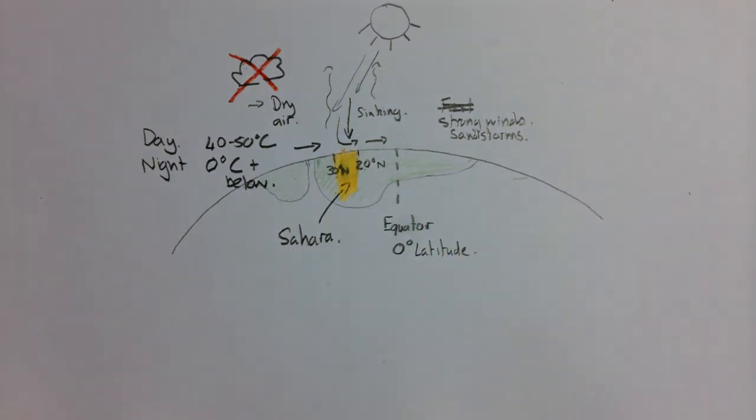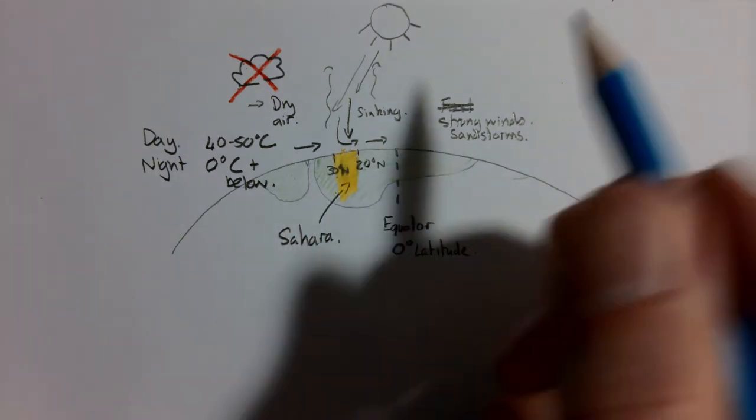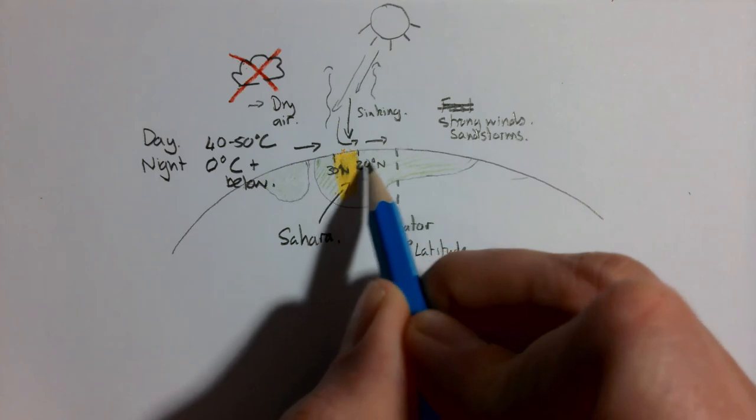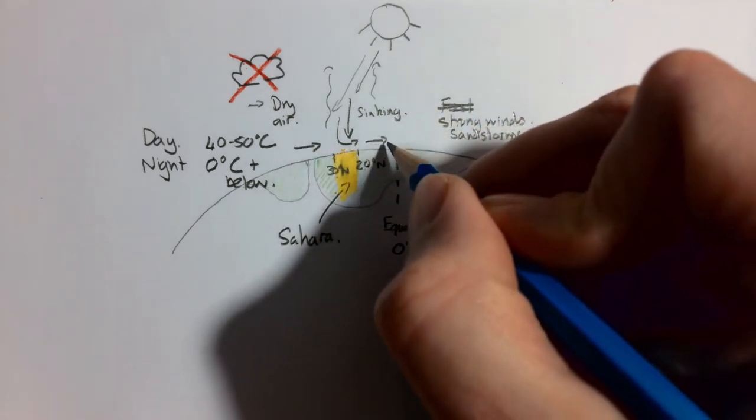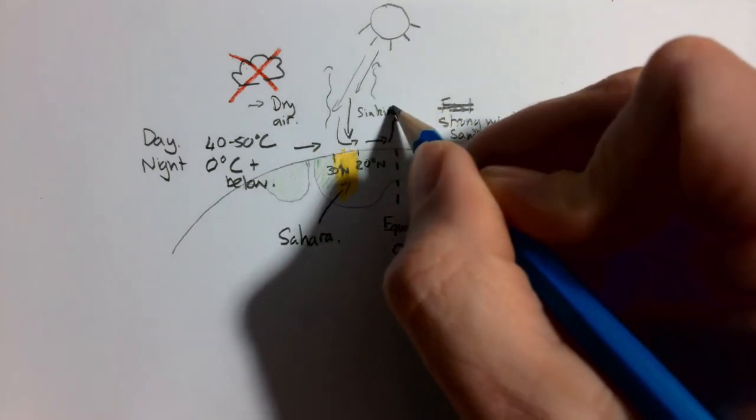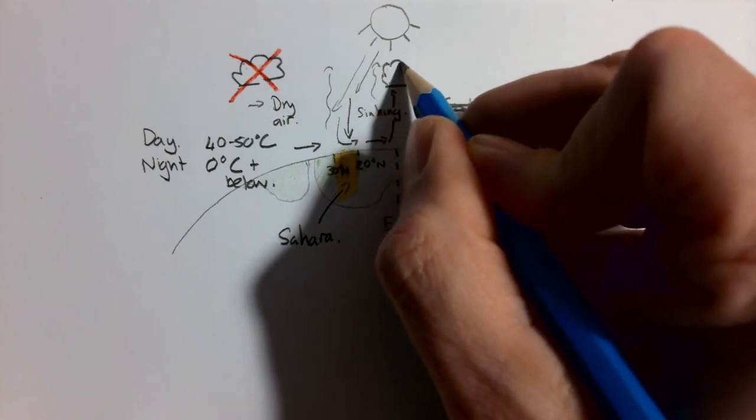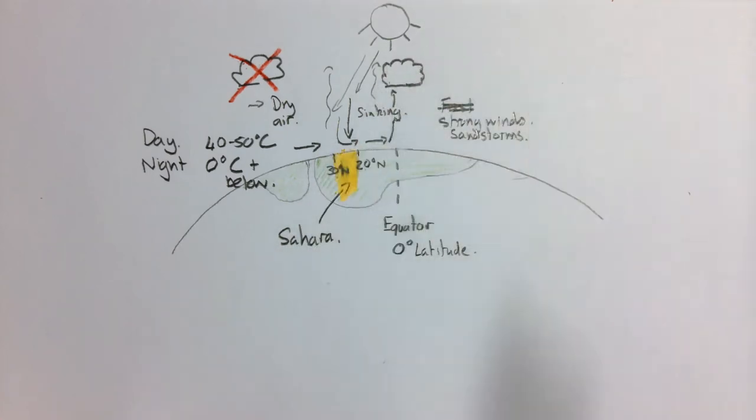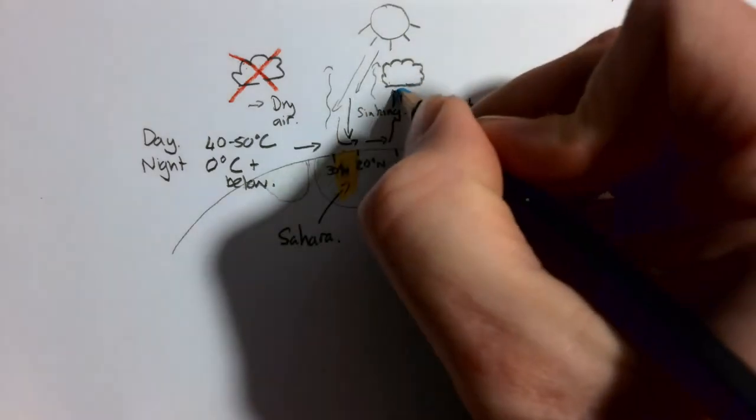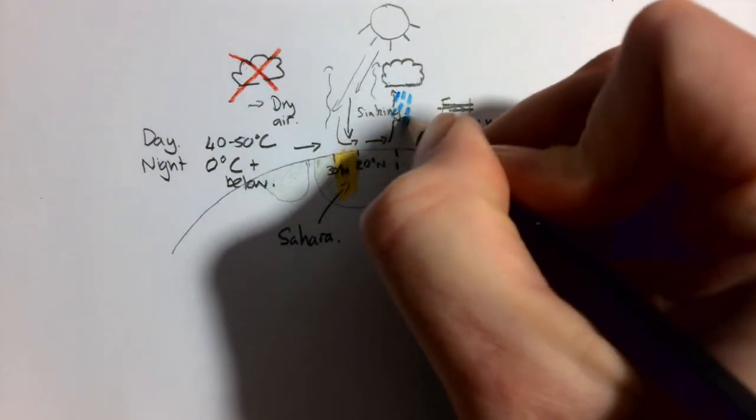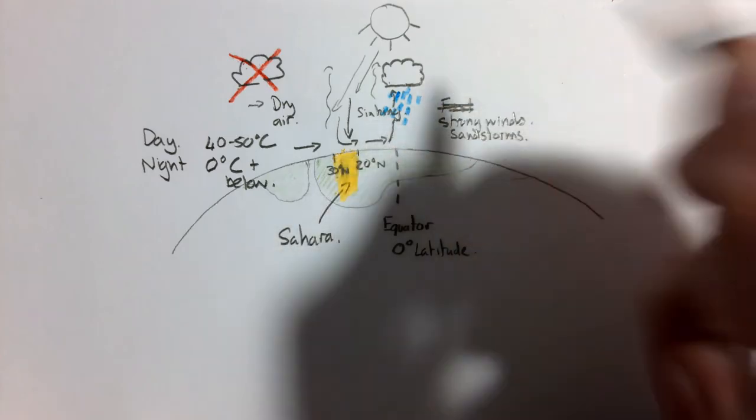Now, by the time they've reached the equator, they have become warmed up by the surface of the earth. And as they warm, they start to rise, form clouds through the process of condensation. And then we get very heavy precipitation occurring over the equator.